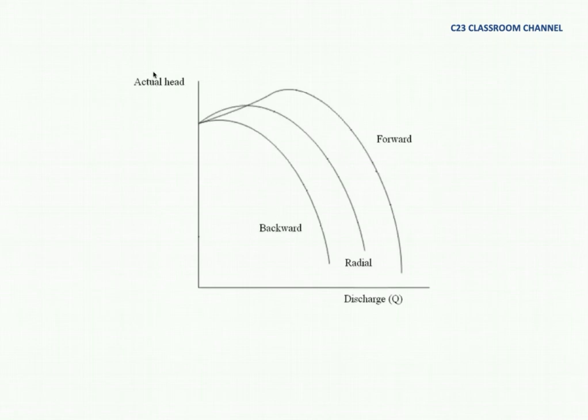This is the graph showing the actual head and discharge. This is the curve shown by the backward blade, this is radial, and this is forward. In reality, the actual head will have this kind of curve. When the pump has backward blade, if we increase the discharge, the actual head will decrease. The radial will slightly decrease and then decrease like this. The forward will give a long range of increment in actual head before it goes down like this.